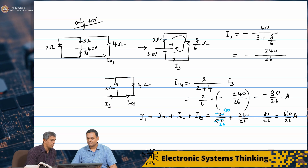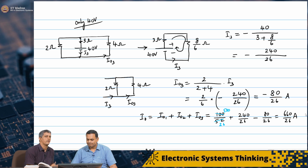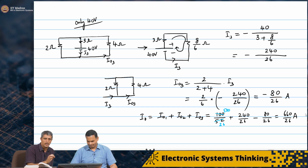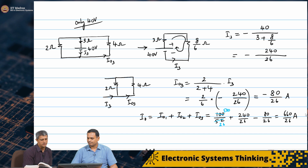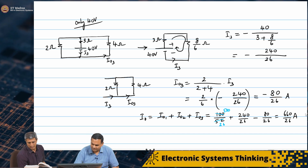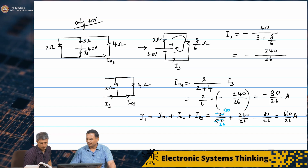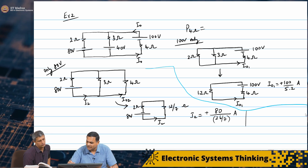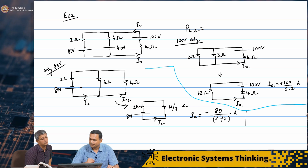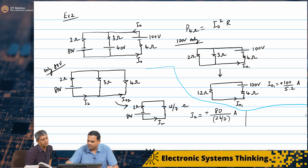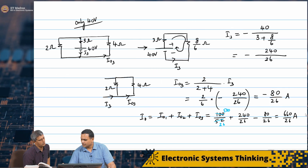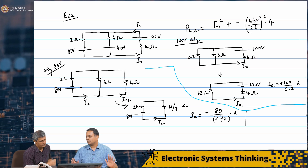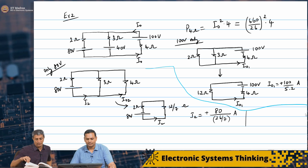This has been a thorough solution with no steps skipped. It is very important to work out every single step like this for as many problems as you can — if in doubt, work it out. Finally, the power delivered to the 4 ohm resistor is P = I₀² × 4 = (660/26)² × 4 watts.